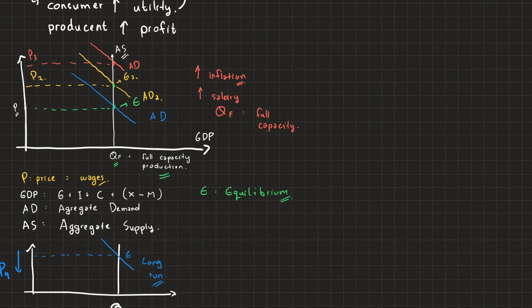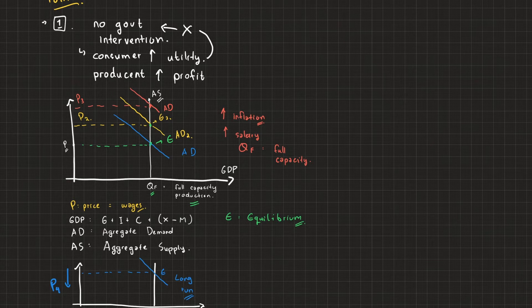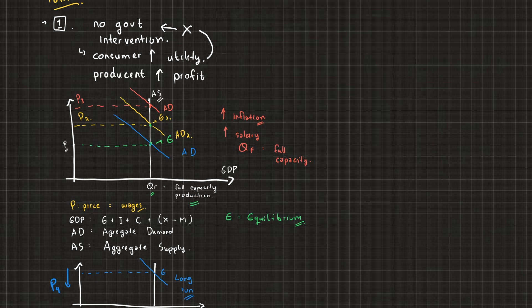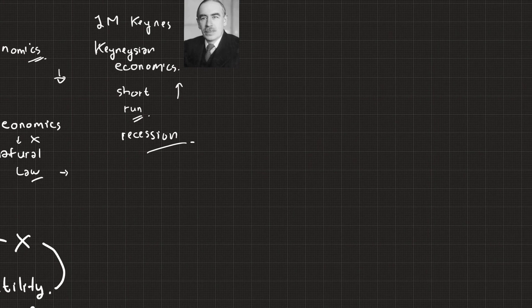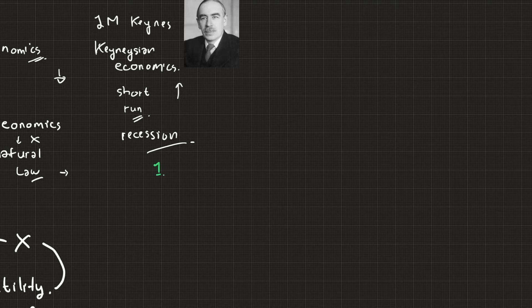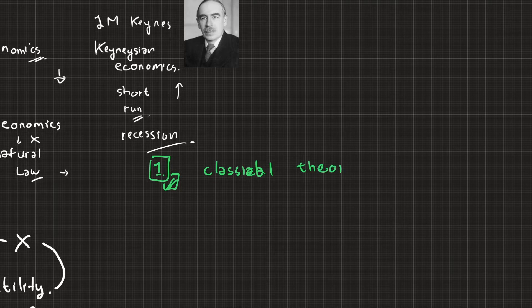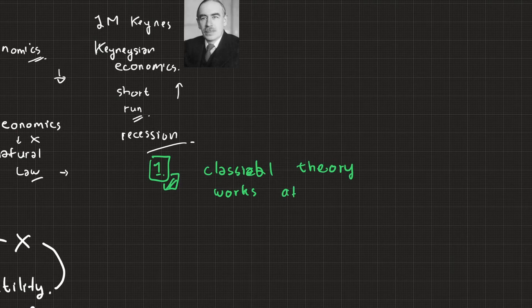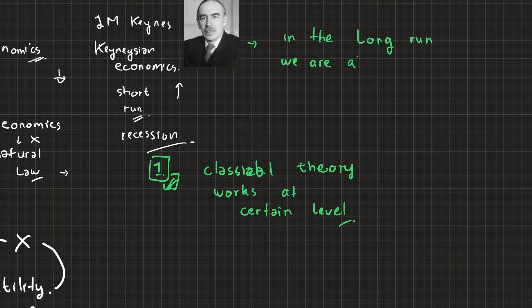But this is not always right, this classical theory. Why? At some certain level, this invisible hand doesn't work anymore. Why does it happen? Let's see in the 1930s in Great Depression, it doesn't work. So now time for John Maynard Keynes. Couple of things that make John Maynard Keynes believe: classical theory works at certain level, and Keynes also believes in the long run we are all dead.